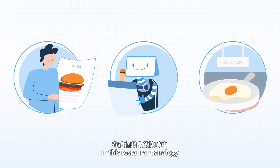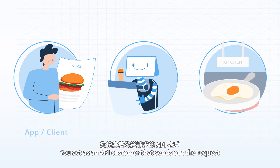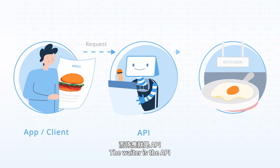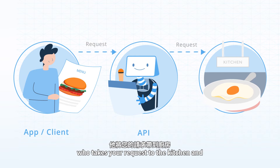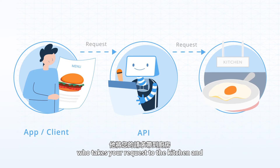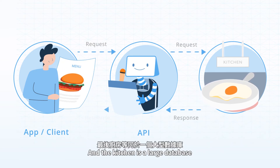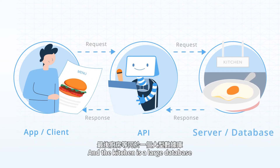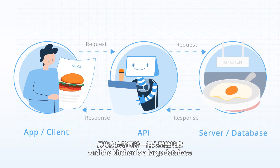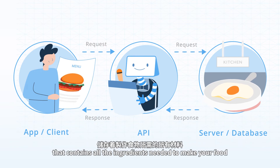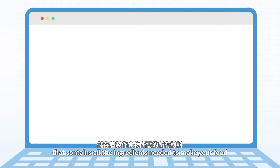In this restaurant analogy, you act as an API customer that sends out the request. The waiter is the API, who takes your request to the kitchen and brings your food back to you. And the kitchen is a large database that contains all the ingredients needed to make your food.